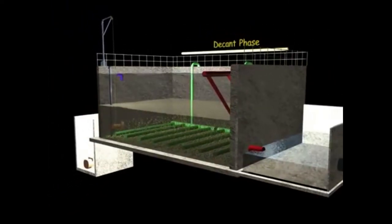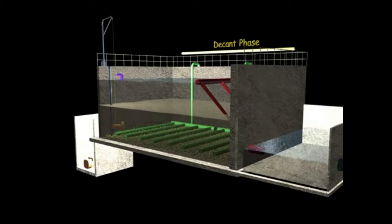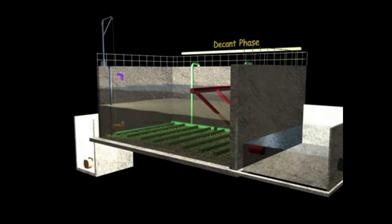Then comes the decant stage. The purpose of decanting is to remove clarified treated water from the reactor. Decanting is done through discharge pipes at predetermined levels, controlled by motorized valve and timer mechanism.